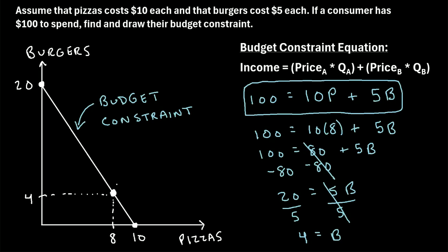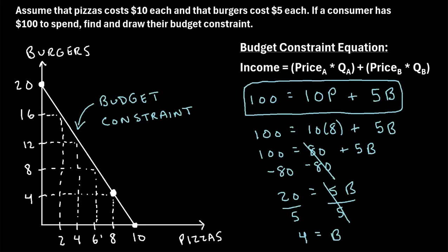If you repeat this process by plugging in different quantities, you can find even more points on the budget constraint line. For example, plugging in 6 pizzas gives you 8 burgers; plugging in 4 pizzas gives you 12 burgers; and choosing 2 pizzas means you have enough income to buy 16 burgers. Each of these is another point on the budget constraint line.